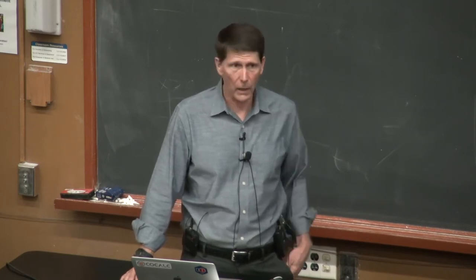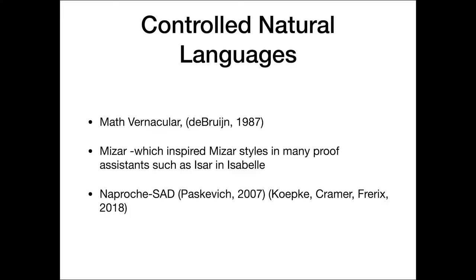Very early on, De Bruijn had something that he called Math Vernacular that was based on English language, but it could be translated directly in a formal way into his system of weak type theory. So the Mizar system, this is one of the proof assistants that I mentioned. They've made a big effort to make the proofs quite readable. And this proof style has been imitated in many of the other proof assistants. So in the next slide, I have an example of a Mizar script that you can see. And then after that, I'll show you an example in Naproche.